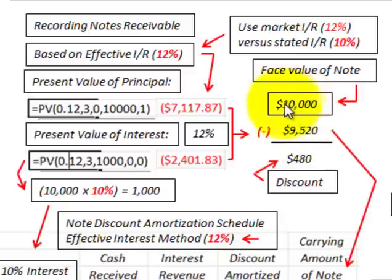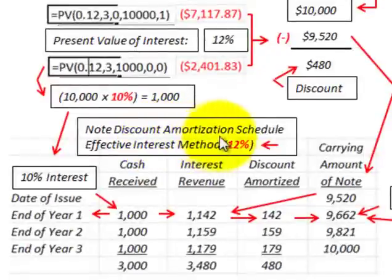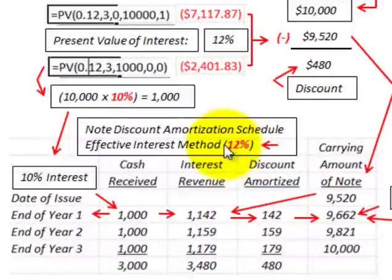Subtracting the present value of $9,520 from the face value of the note of $10,000 gives us a discount amount of $480. That's what we have to amortize — this discount amount of $480. We're going to use the effective interest method, based on the 12% market rate of interest for this note.